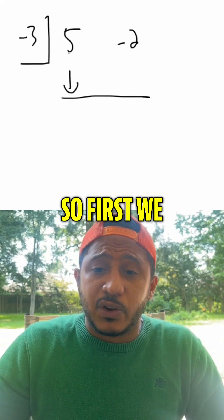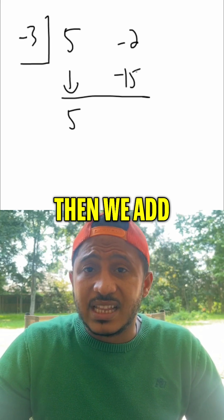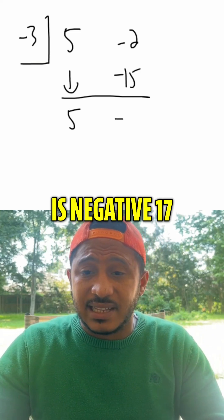Now, synthetic division just says multiply and add. So first, we bring down this 5. Then we multiply. Negative 3 times 5, we get negative 15. Then we add. Negative 2 plus negative 15 is negative 17.